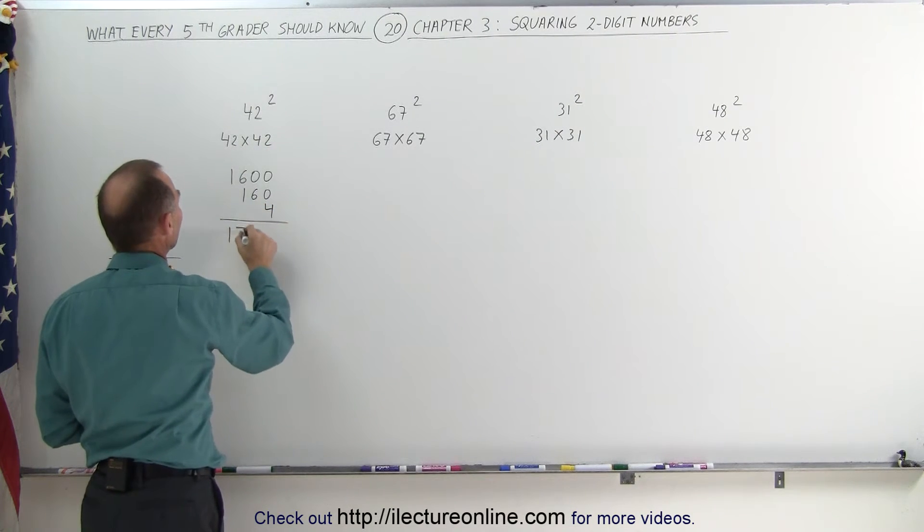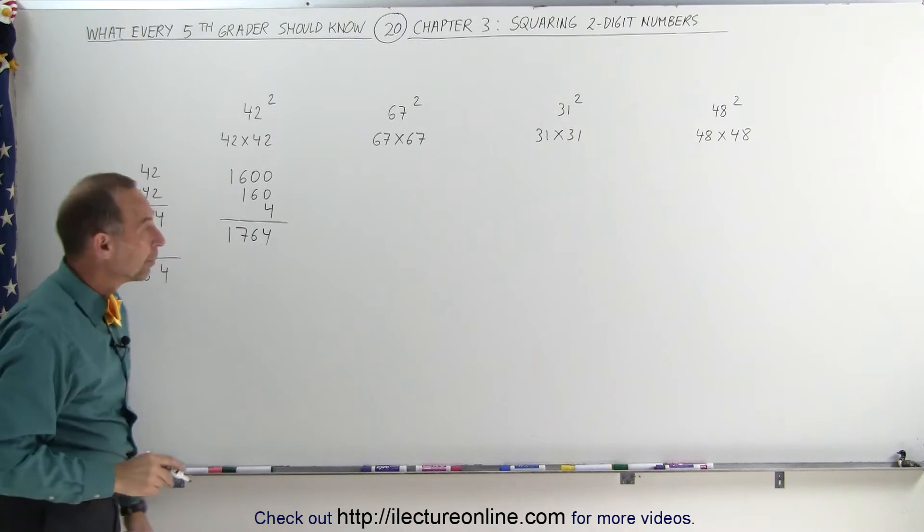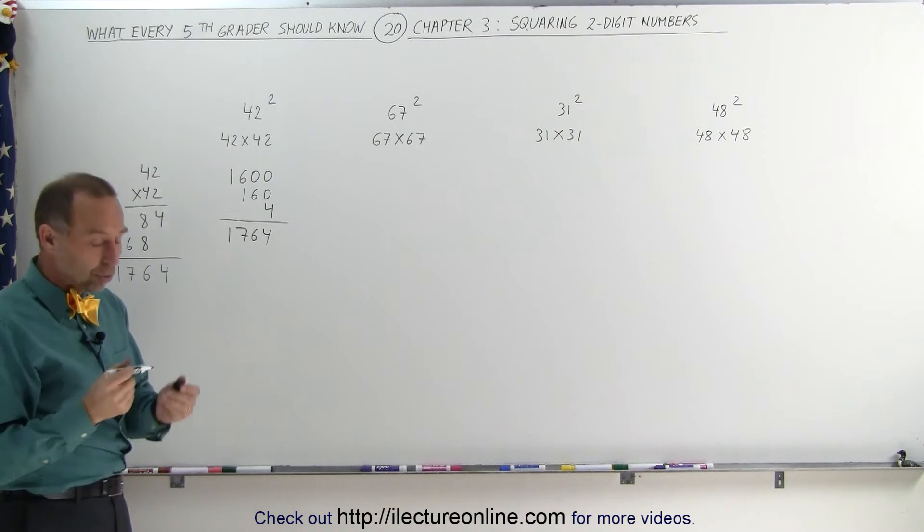Add it all together. That's 1700 and 64. Of course, you get the same answer. But that's the technique you would use when you do it in your head.